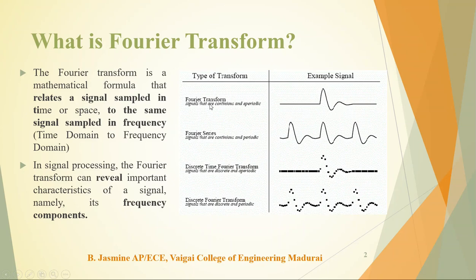The Fourier Transform is applicable for both periodic and aperiodic signals, but the Fourier Series is only applicable for periodic signals. So we use the Fourier Transform for analyzing both periodic as well as aperiodic signals. This signal is continuous and aperiodic; the Fourier Series is continuous and periodic. The Fourier Transform is used to analyze both periodic as well as aperiodic continuous signals.